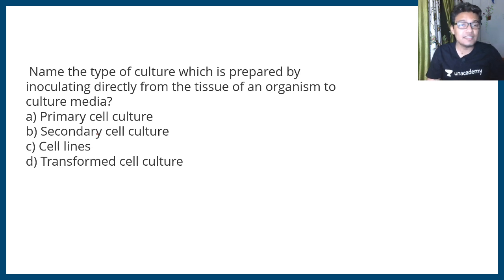Next question: name the type of culture which is prepared by inoculating directly from the tissue of an organism to the culture media. Primary culture, secondary culture, cell line, or transformed cell culture? What you need to know is just the basics of these techniques. So it would be a primary cell culture. If you want to learn more about primary and secondary culture, you can watch the video in the i button.